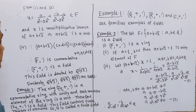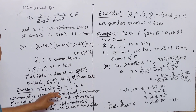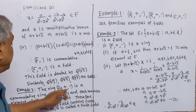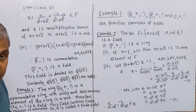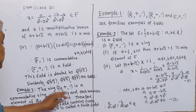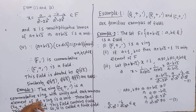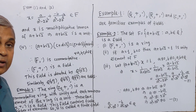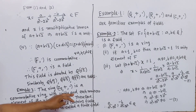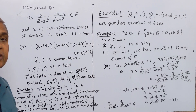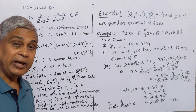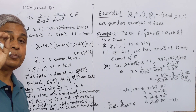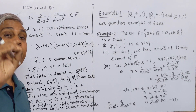Example 3: The ring Z₅ with binary compositions addition and multiplication is a commutative ring with unity, and each non-zero element of the ring is a unit. Therefore Z₅ with addition and multiplication is a field. This field contains a finite number of elements, so it is called a finite field.